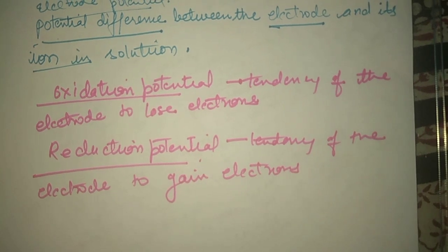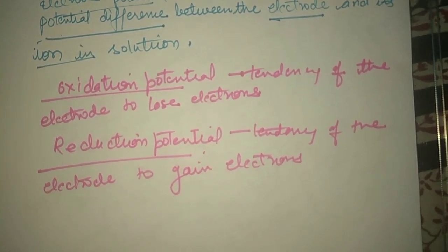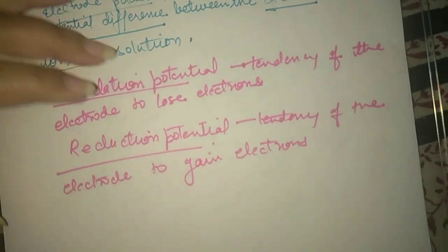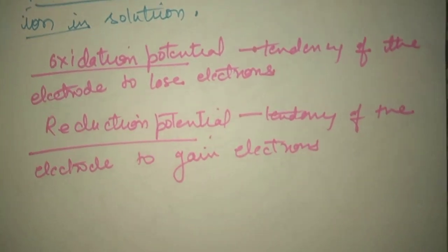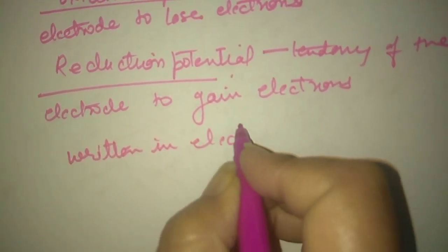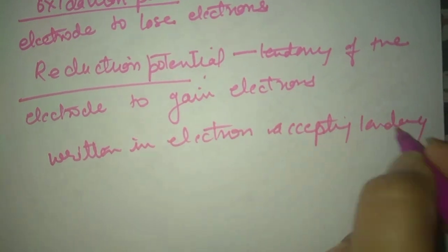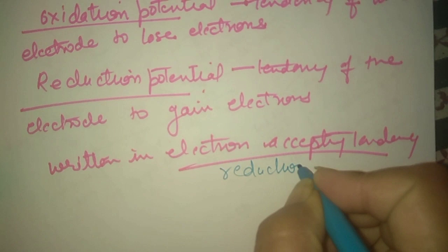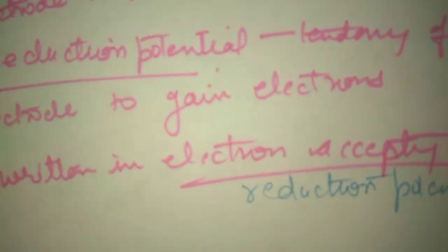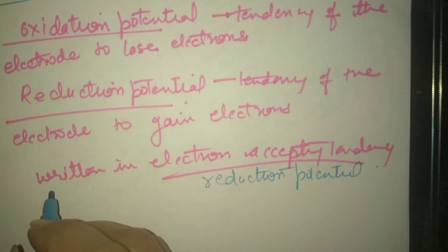Here we are using two terms: reduction potential and oxidation potential. According to the latest IUPAC conventions, the half-cell reactions in an electrochemical cell are written in terms of electron-accepting tendency — that is, in terms of reduction potential. So whatever half-cell reaction is given to you, you have to write it in the form of reduction potential.